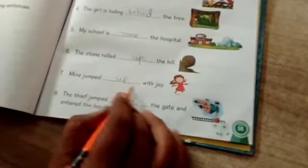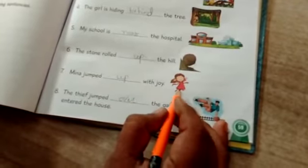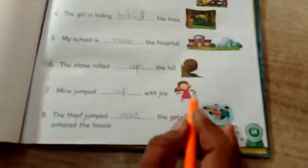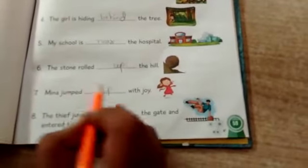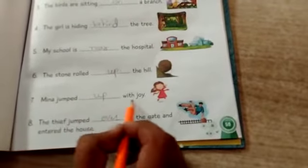Mina jumped, dash with joy. Where did you jump? The male jumped up with joy.